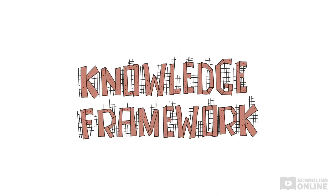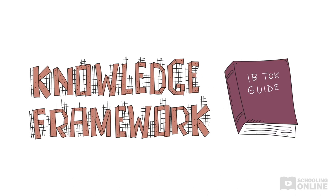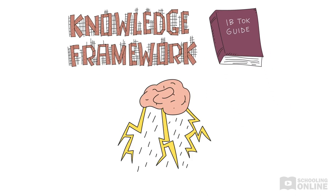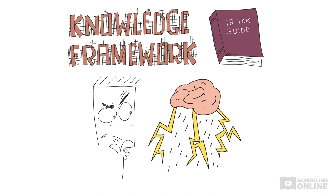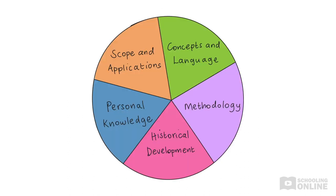To start, let's look at the knowledge framework provided in the IB TOK Guide. It'll help us brainstorm important issues related to each area of knowledge. This is what the knowledge framework looks like. As you can see, there are five ways to approach each area of knowledge.